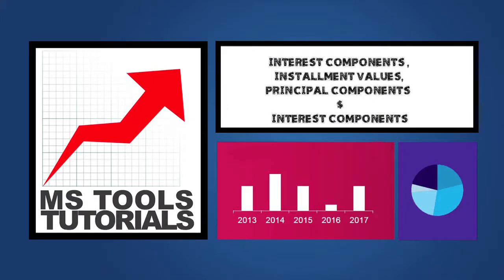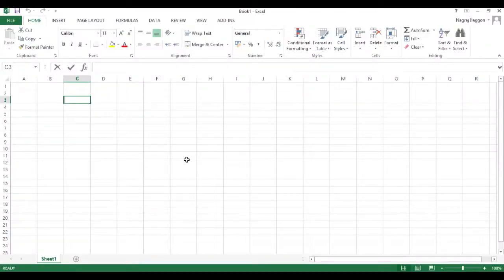Welcome to the series 'Learn Excel in 24 Hours'. In this video we'll study how to use Excel to calculate interest components and installment values. Typically when we take a home loan, car loan, or personal loan, we have monthly installments to be paid which have a principal component and interest component, paid in the form of equated monthly installments known as EMIs.